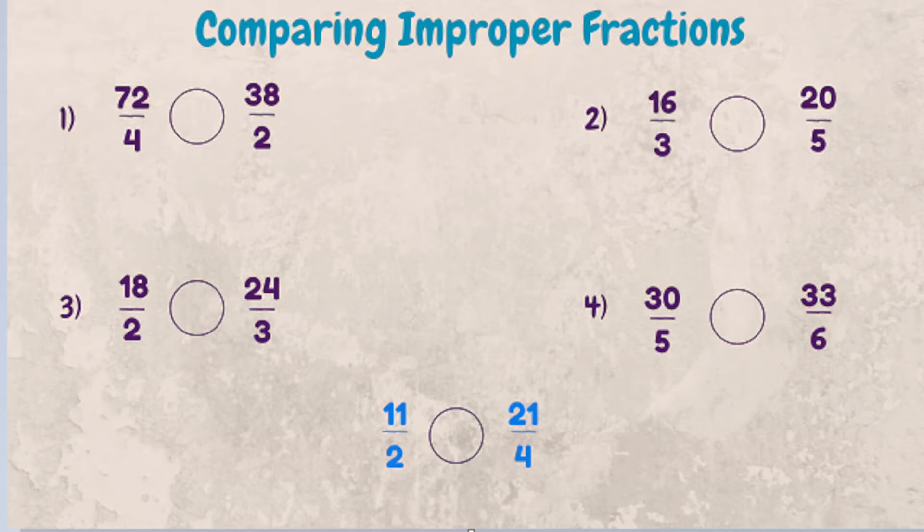But cross multiplication can help you accomplish that in just a few steps. So let's walk through the first one. Let's compare 72 fourths to 38 halves.